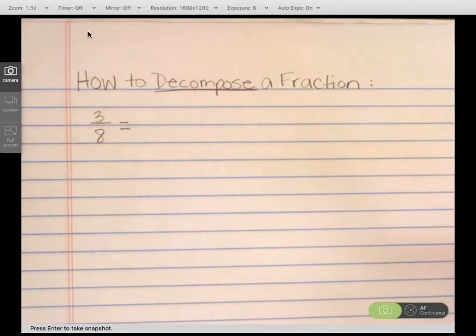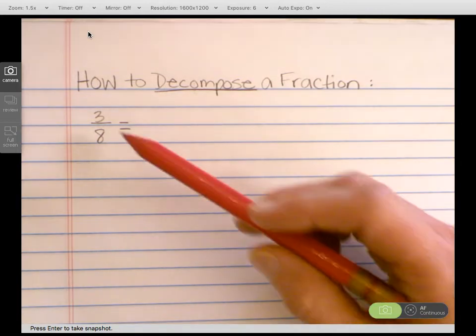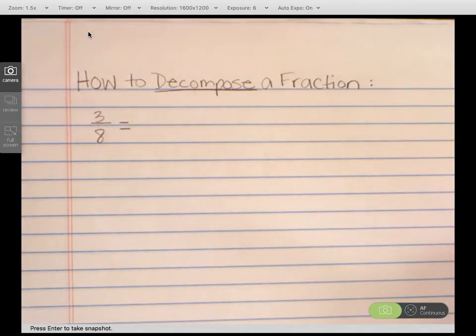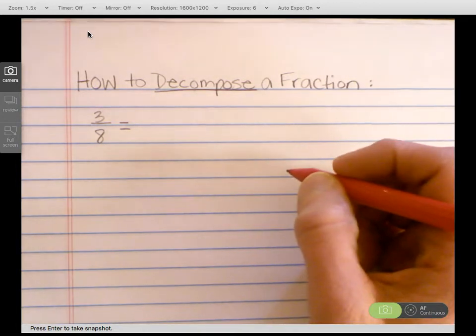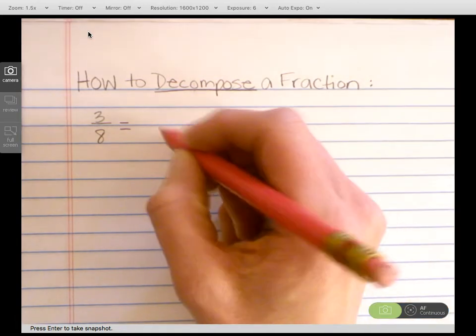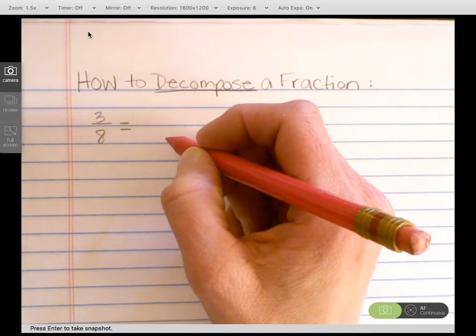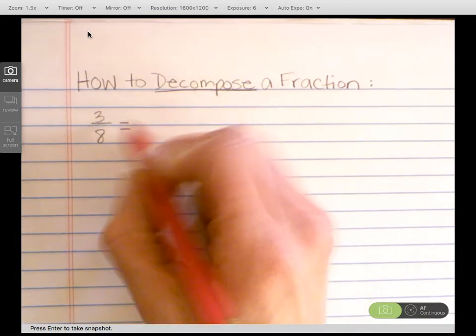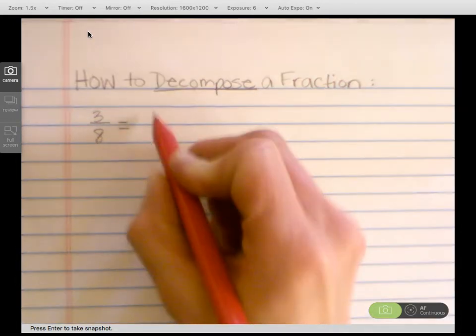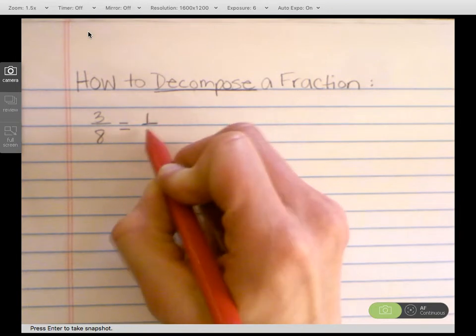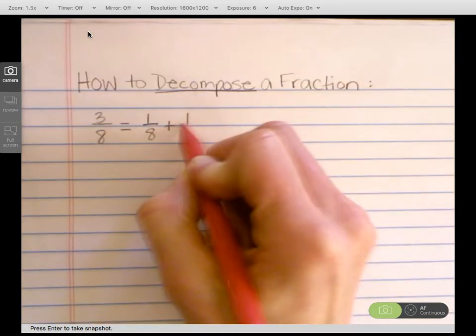You're going to show it in another way that uses more fractions than the one that you start with. So we're just going to start with a fraction 3 eighths and decompose it. One of the basic ways to do this is to use unit fractions, and unit fractions are fractions that have 1 as a numerator. So if I were going to write 3 eighths using unit fractions, it would just be 1 eighth plus 1 eighth plus 1 eighth.